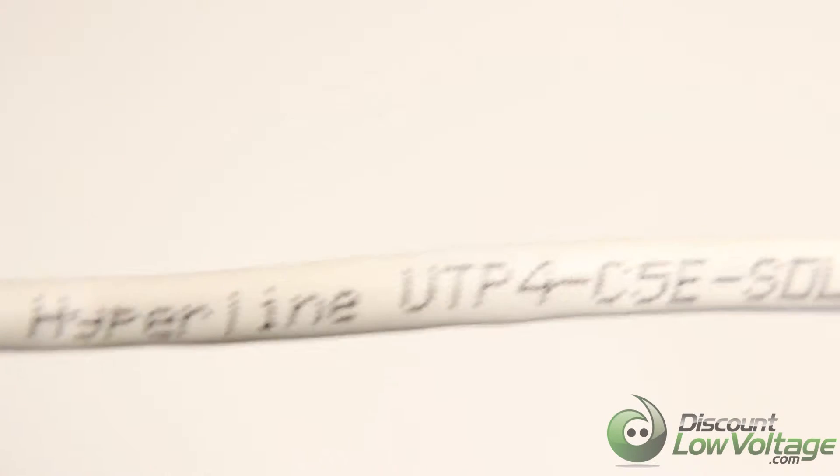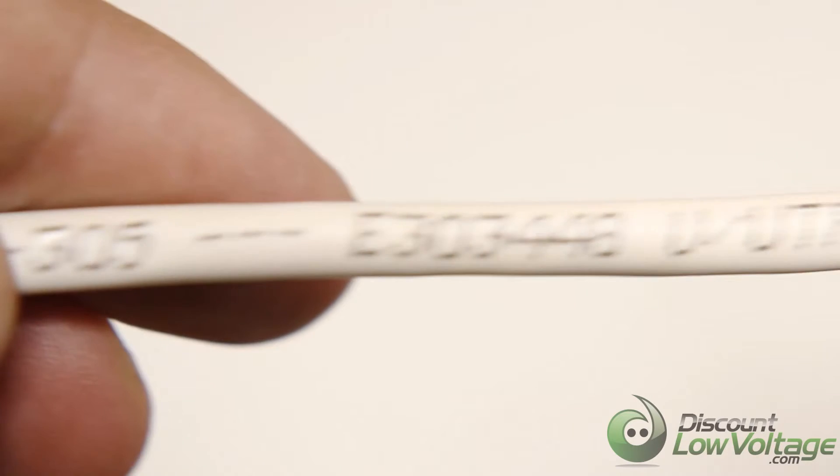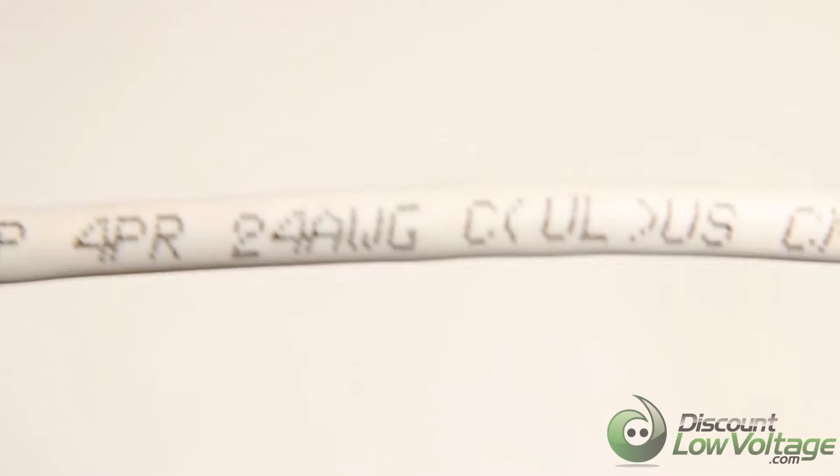This is Hyperline's Cat5e 350MHz unshielded plenum cable that comes in an easy to pull box and is UL certified.